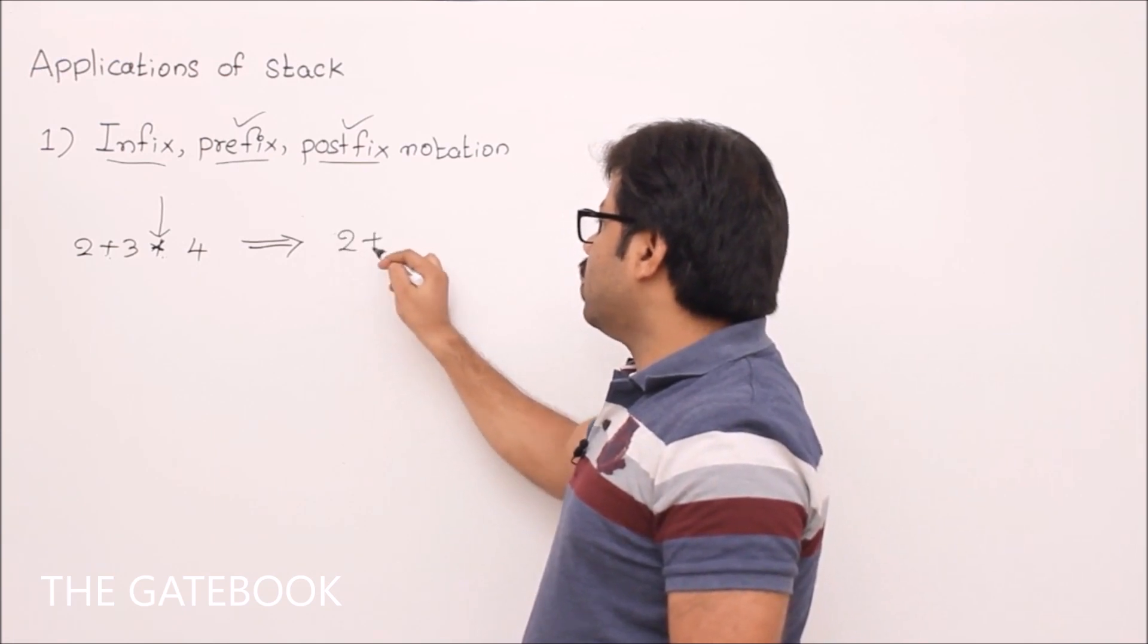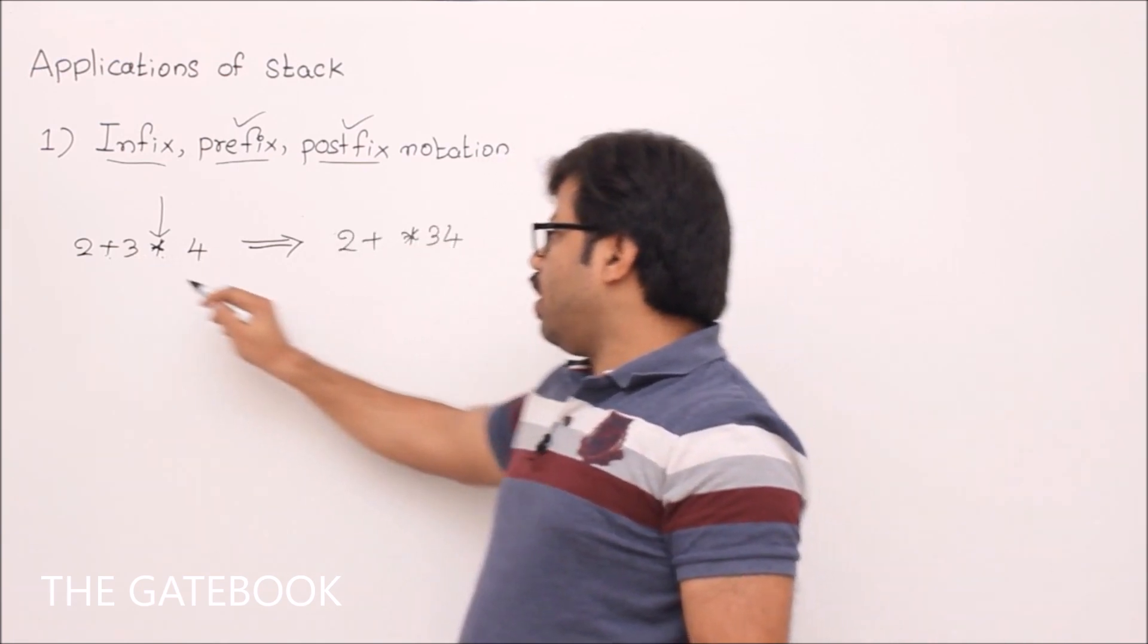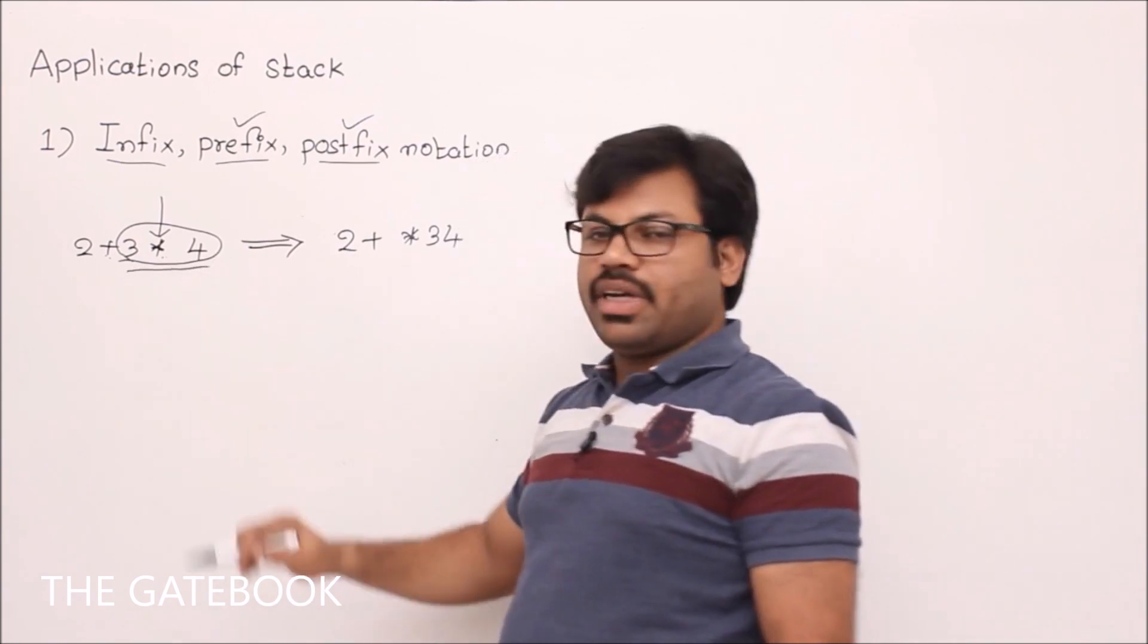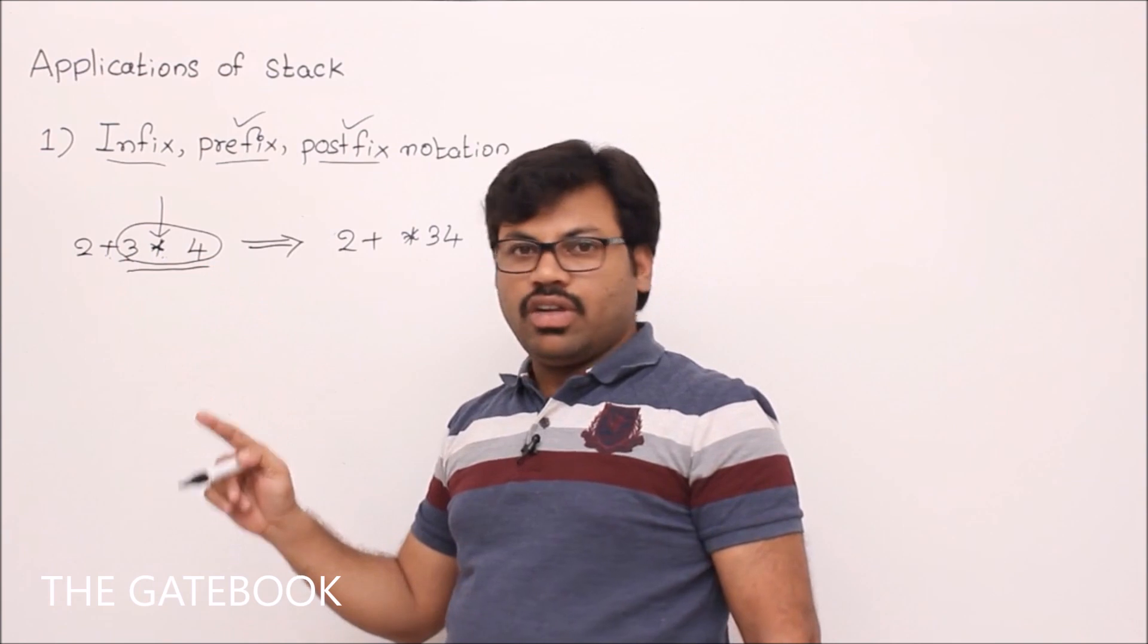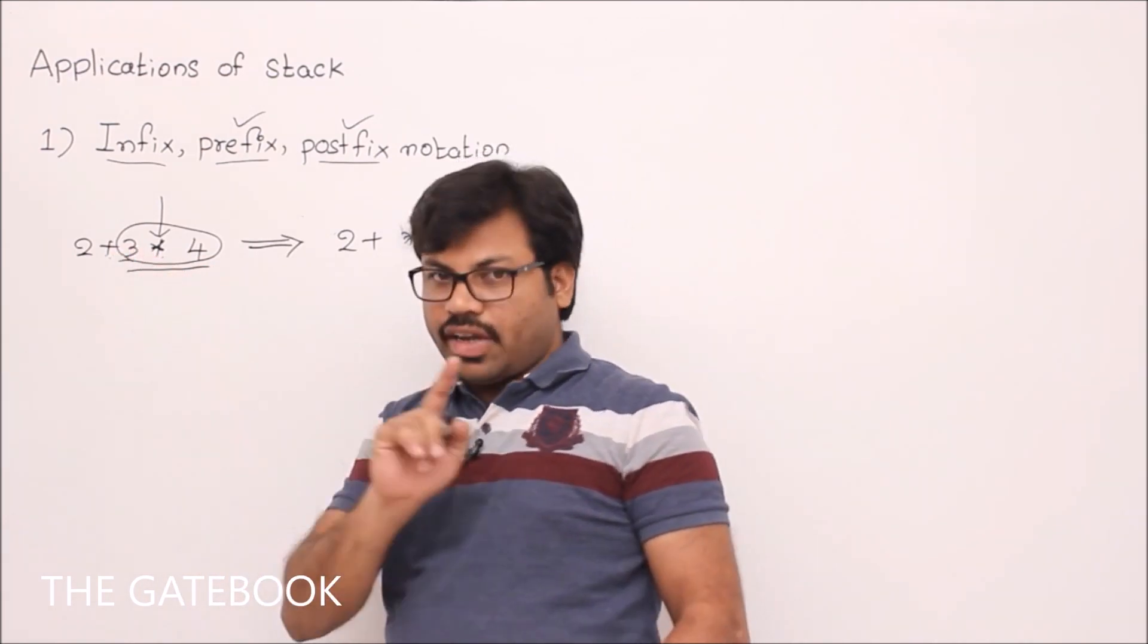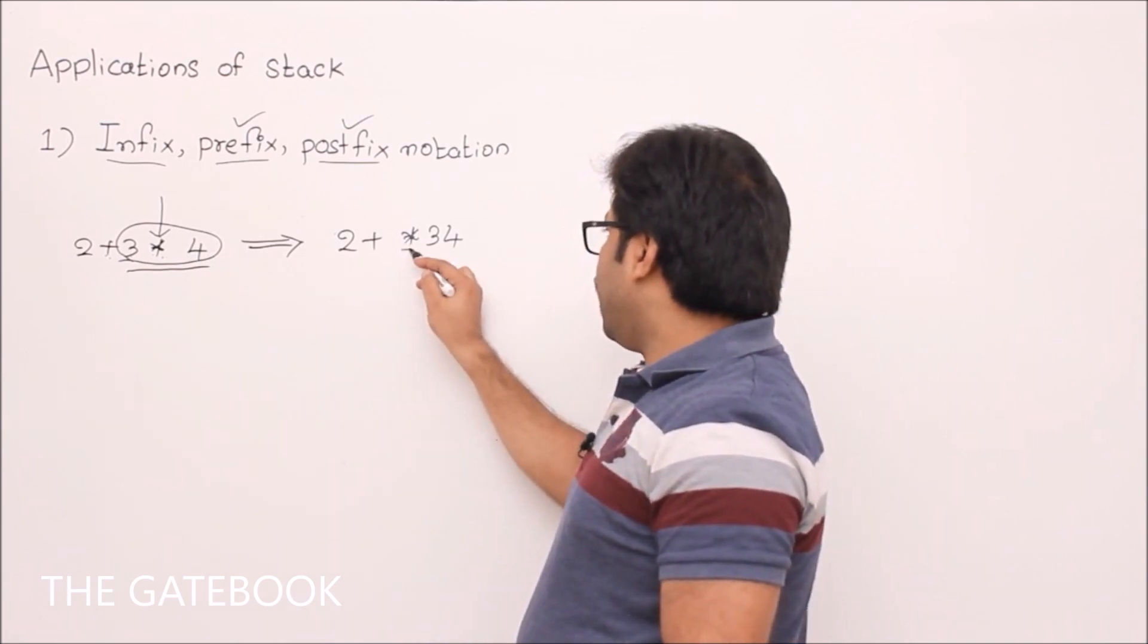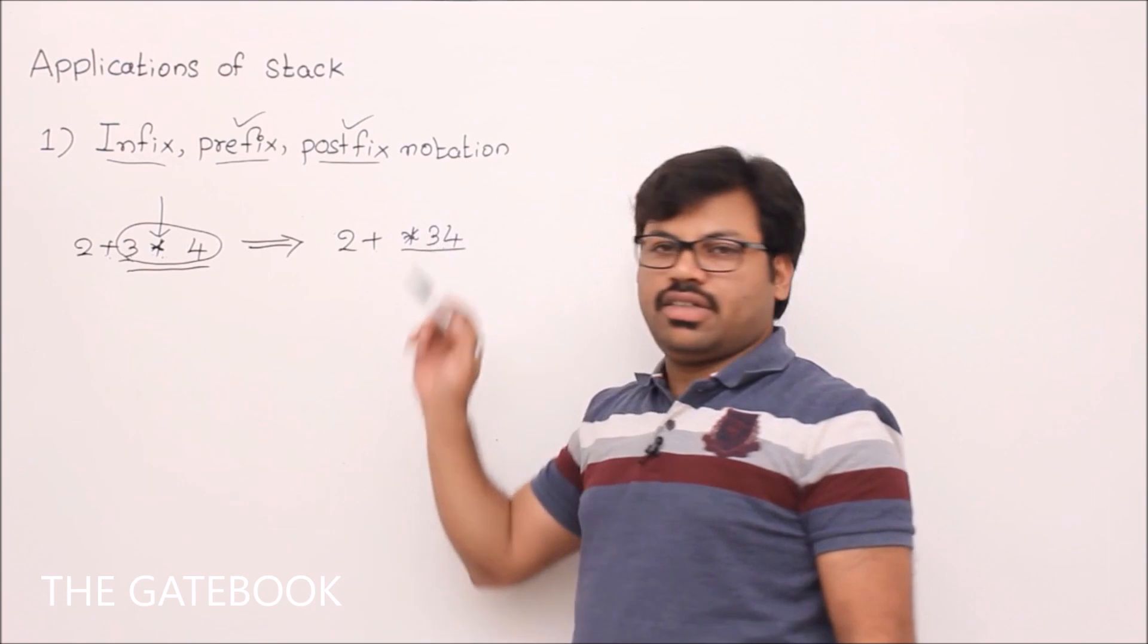Then it will become 2 plus. So 3 star 4 will become star 3 4. Whenever some sub part of the expression is converted to prefix, then you treat it as an operand. Because the result, if you see, if I compute it, 3 star 4 is 12. 12 is going to be an operand of plus. That's why this entire part is an operand. It is going to be an operand for this addition.